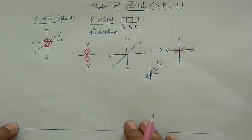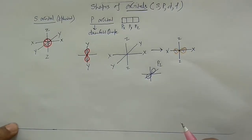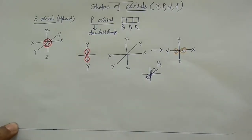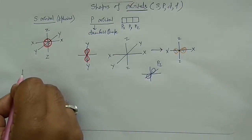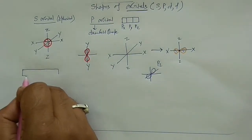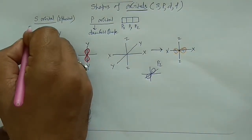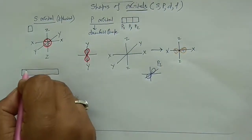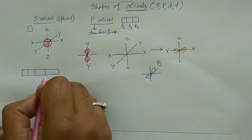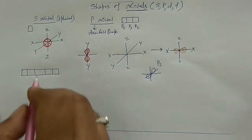Since we are discussing hybridization in organic molecules, carbon has atomic number 6 and there is no need for d orbitals in this context. However, the shapes of d orbitals become very important in coordination chemistry, especially in crystal field theory. For reference: s has one orbital, p has three (px, py, pz), and d has five.